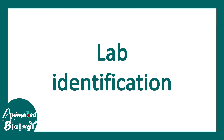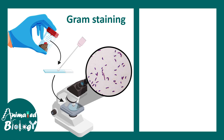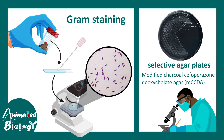Lab identification is done by culturing stool samples and performing gram staining. The characteristic S-shaped structure with flagella can be visualized under the microscope. It can be selectively isolated and grown on modified charcoal cefoperazone deoxycholate agar (CCDA), a selective agar plate which contains charcoal and appears black, with distinct colonies.